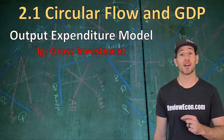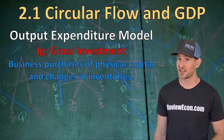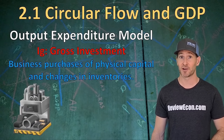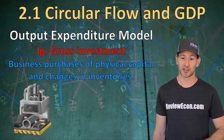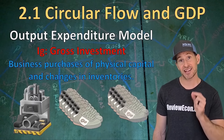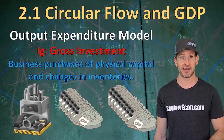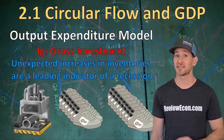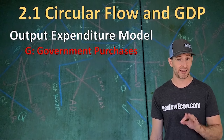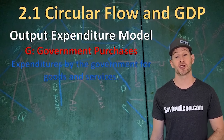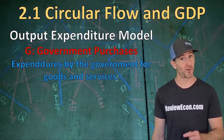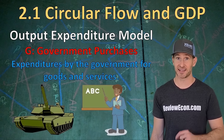The next variable is gross investment, I sub G. Here we look primarily at business purchases of physical capital, but also changes in inventory. If a business purchases new capital equipment, that gets added to GDP. We also look at, for example, a shoe factory that produces more shoes than it sells — that change in inventory is added to GDP as gross investment. Unexpected increases in inventories can be an indication of economic downturn ahead. The next variable is G for government purchases: expenditures by the government where the government receives goods or services, such as a new tank for the military or the services of a high school economics teacher.